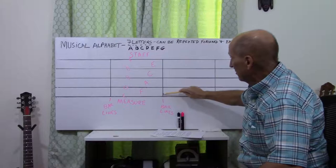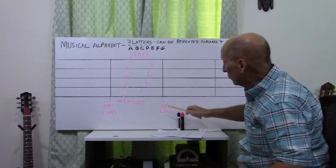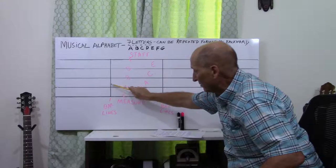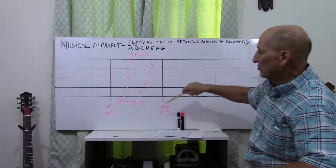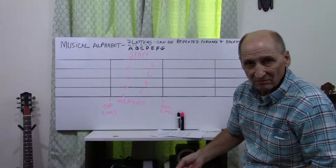With the music staff, you see that you have these lines? The lines separate the staff up into what we call measures. The lines are called bar lines. In between the bar lines, you have the measures. So, you have measures, you have bar lines. You have lines and spaces.